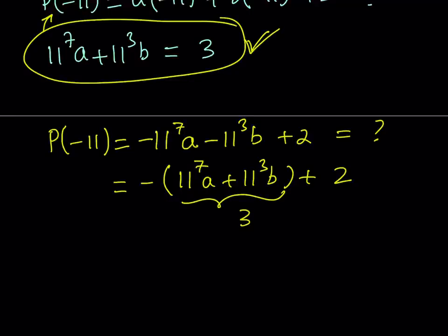that's going to be a negative 3 plus 2 is going to be the answer. So P of negative 11 from here is just going to be negative 1. So that should be the answer, right? Let's go ahead and take a look at a second approach.